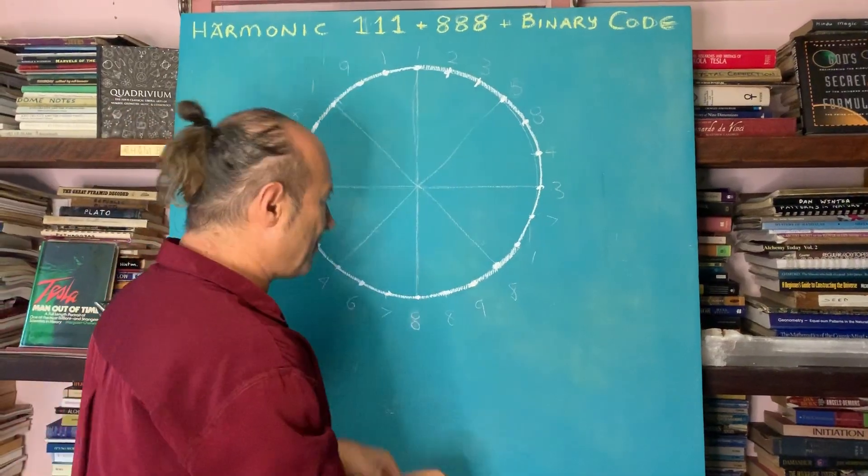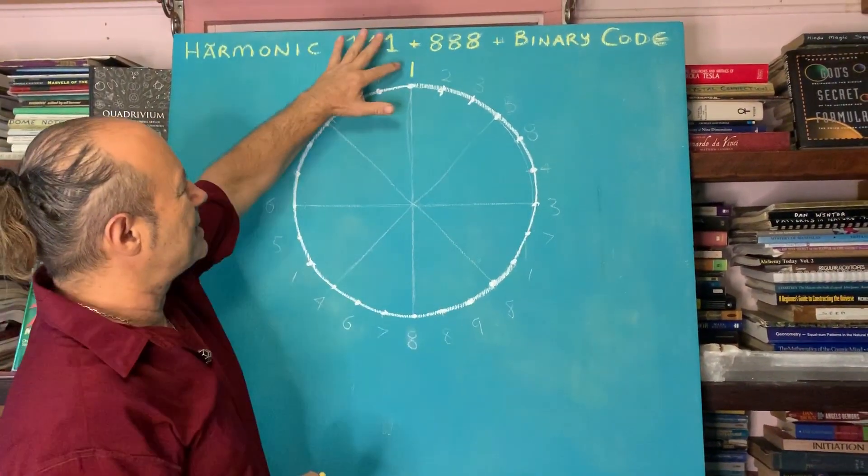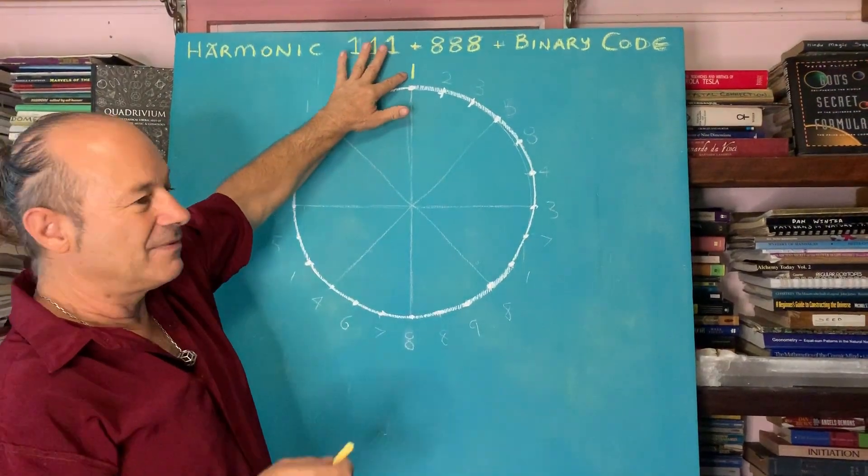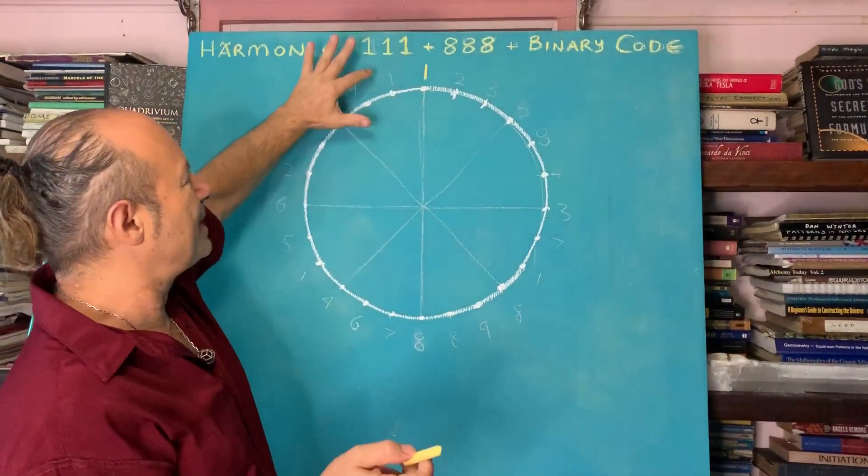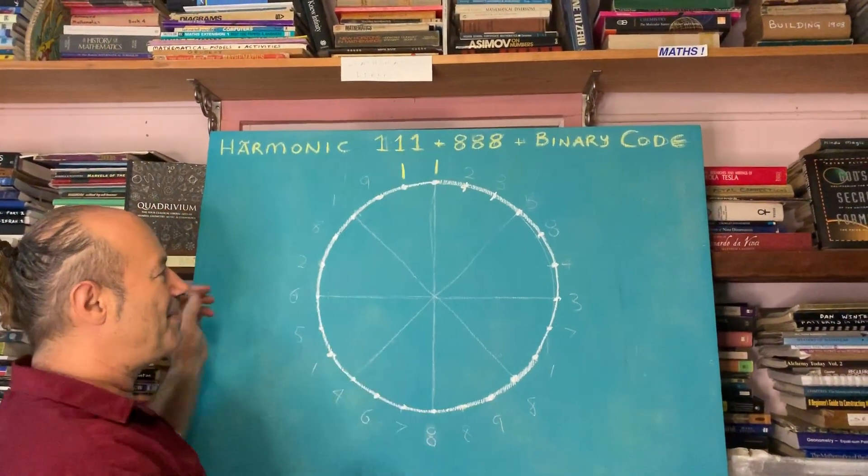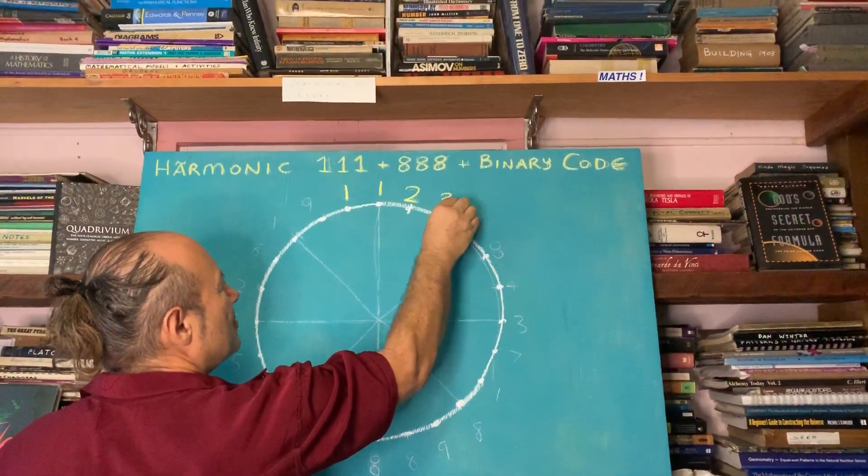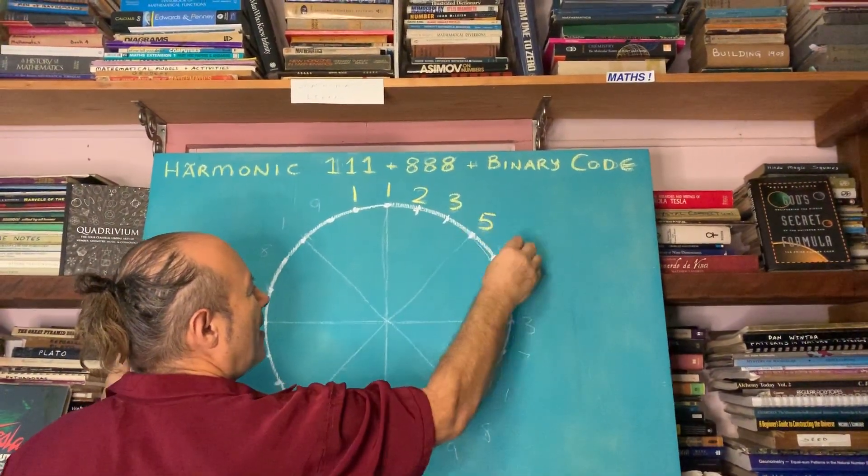I'm going to write down the Fibonacci sequence. Normally we start with the one there, but for a deliberate reason, I'm going to start off center from the zenith. So our Fibonacci sequence is one, one, two, three, five, eight.